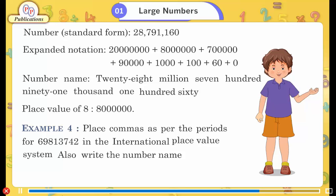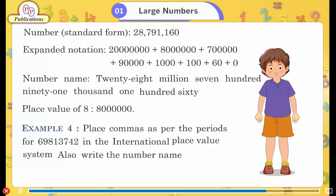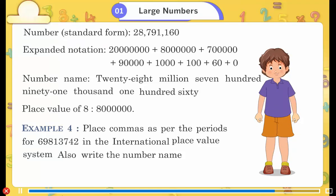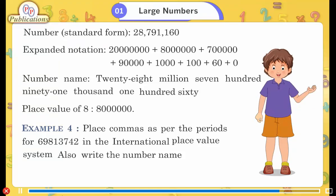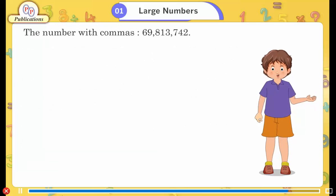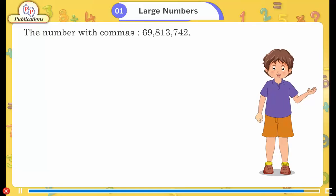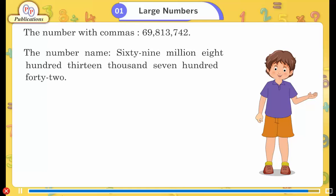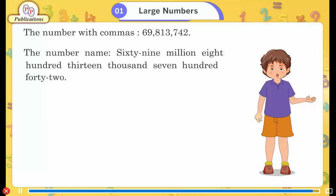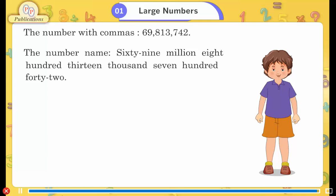Example 4: Place commas as per the periods for 69813742 in the international place value system. Also write the number name. Answer: 69,813,742.